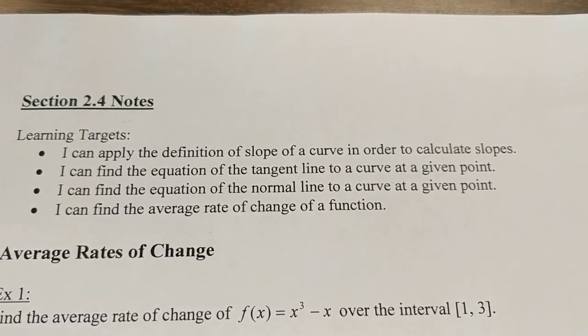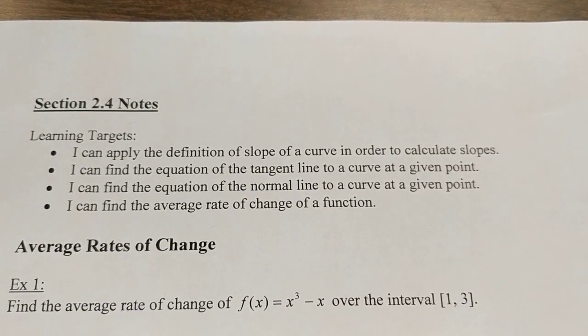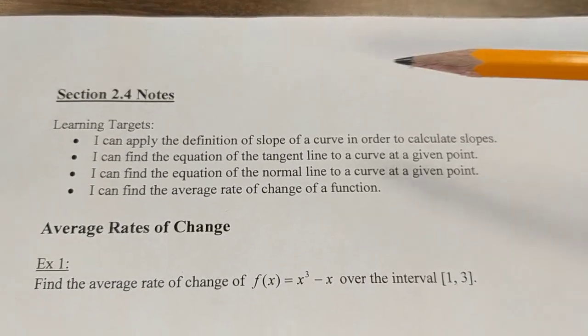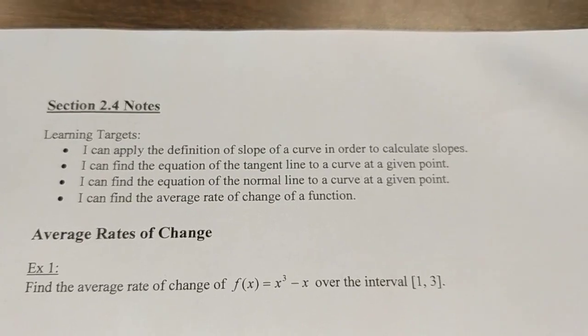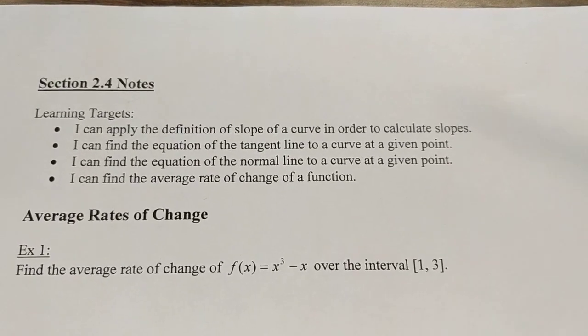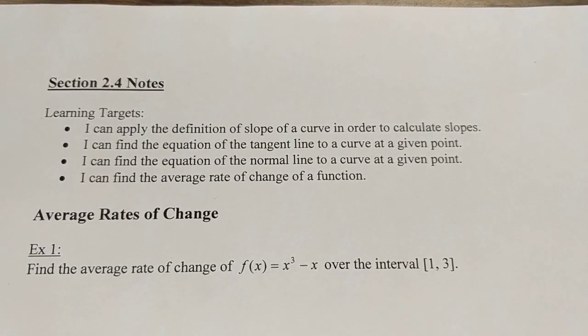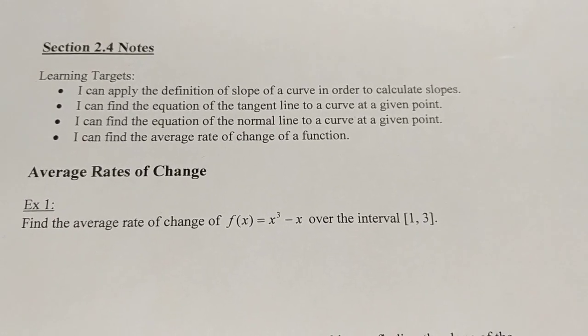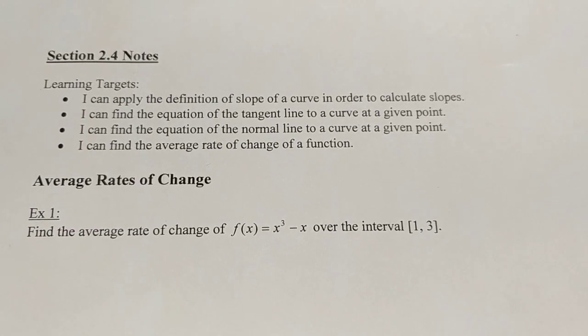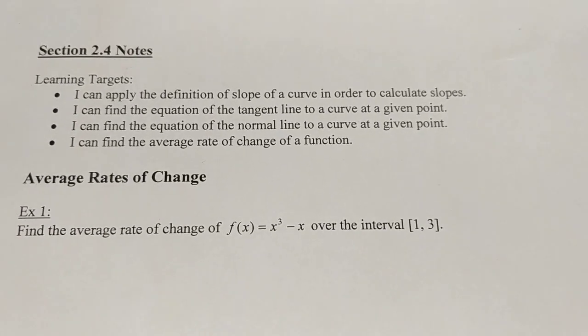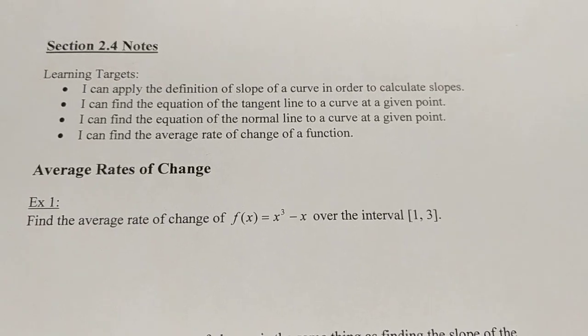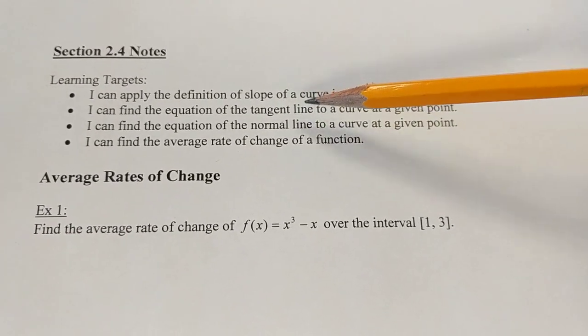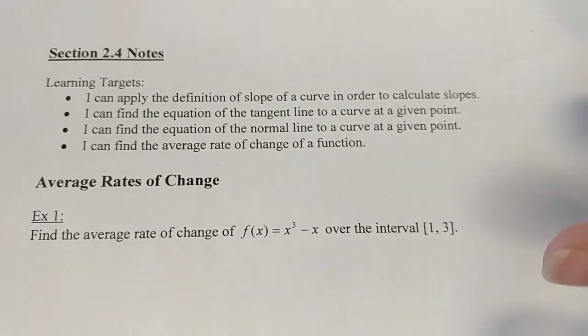Today we're talking about section 2-4, average rates of change and instantaneous rates of change. We're talking about how to find the slope of a curve. This is a lead-in into chapter 3, ending the limits unit and heading into unit 3 where we start talking about how to use derivatives to find instantaneous rates of change. We'll talk about finding equations of tangent lines, normal lines, and average rate of change.